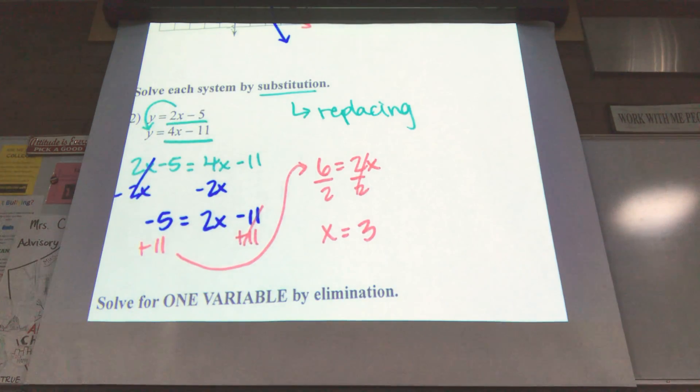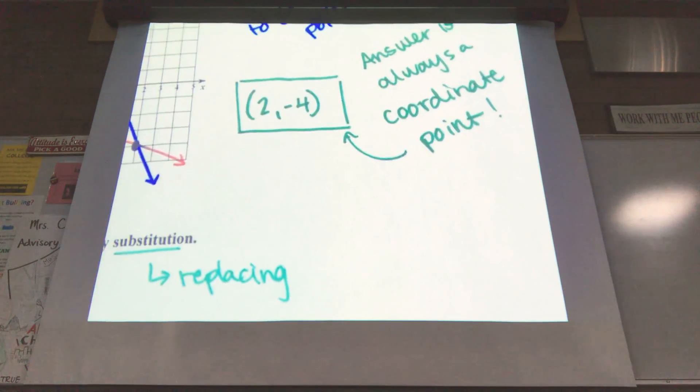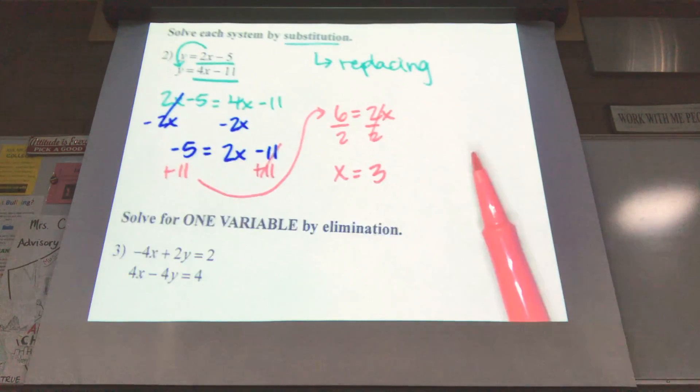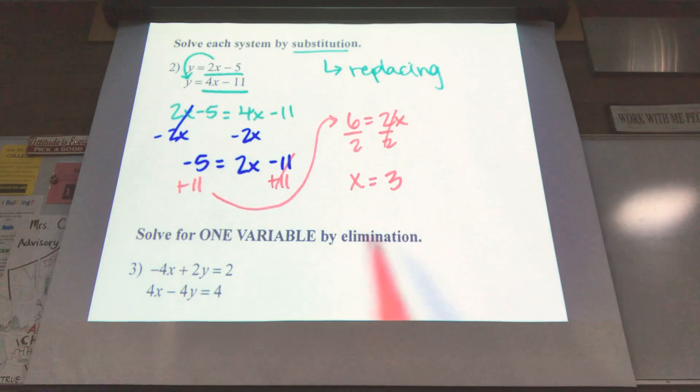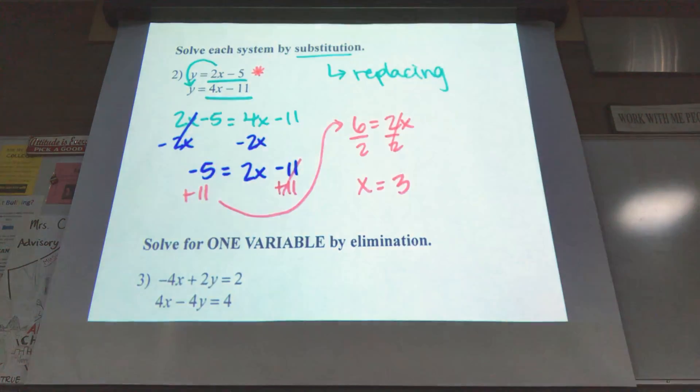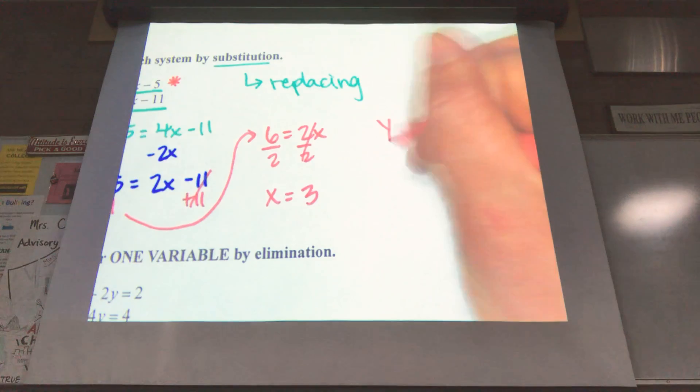That's not our final answer because always, if you look back up here, answer is always a coordinate point. We only have the x part. We need the y part. So now we're going to use this x to find y. I don't care which one you choose. You're going to get the same answer on either, so I'll just choose the top. So now I have y equals 2 times x minus 5.